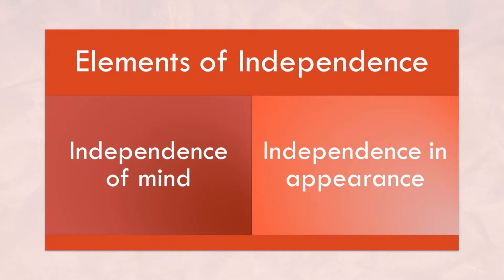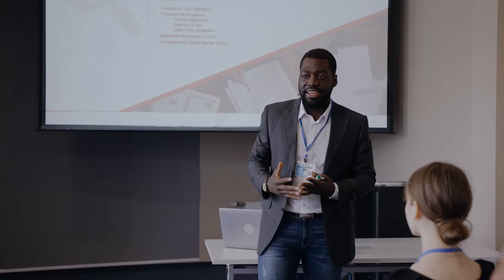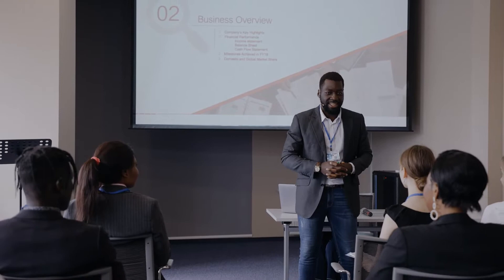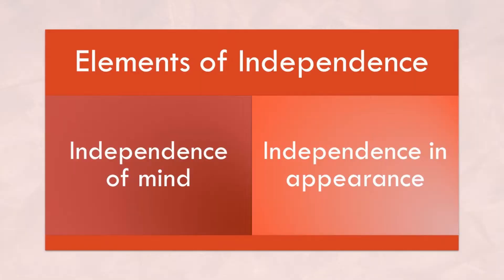What are the elements or types of independence? There are two: independence of mind and independence in appearance. Think of independence of mind as the mentality or state of mind that allows an internal audit to be performed without any negative or limiting influences that may compromise internal auditors' professional judgment. When an auditor thinks independently and performs audits with an independent mentality, they act with integrity and exercise the required level of professional skepticism, which means auditors do not solely rely on the words of management — instead, they ask probing questions and obtain sufficient evidence to support their final opinions and conclusions.